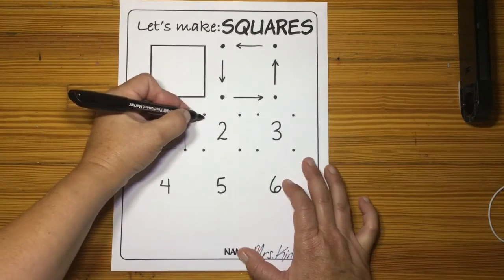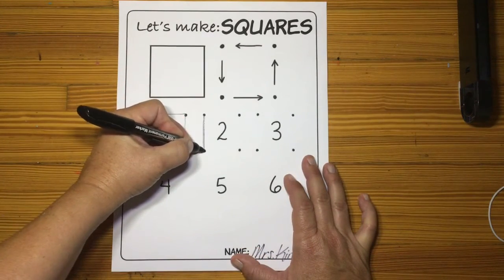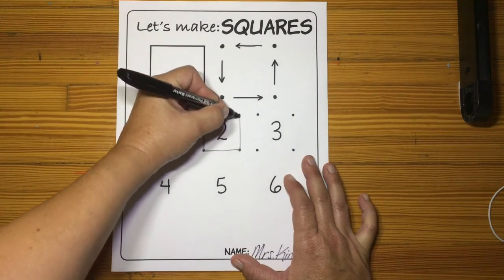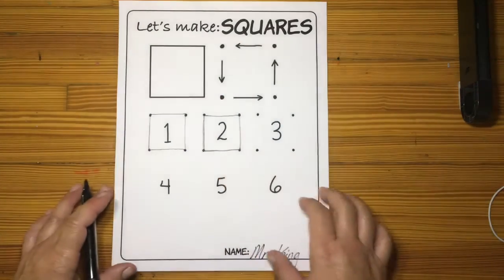Let's do number two. Down, to the right, back up, and to the left. Oh, that's a nice square right there.